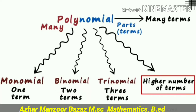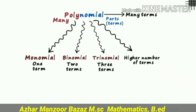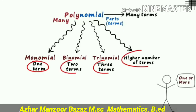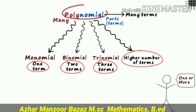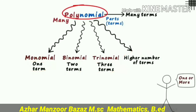Students have a misconception — they say more than three terms is known as a polynomial. No, no. All of these — monomial, binomial, trinomial — are all polynomials. More than three terms is just a higher number of terms. That is the wrong concept which we have learned.